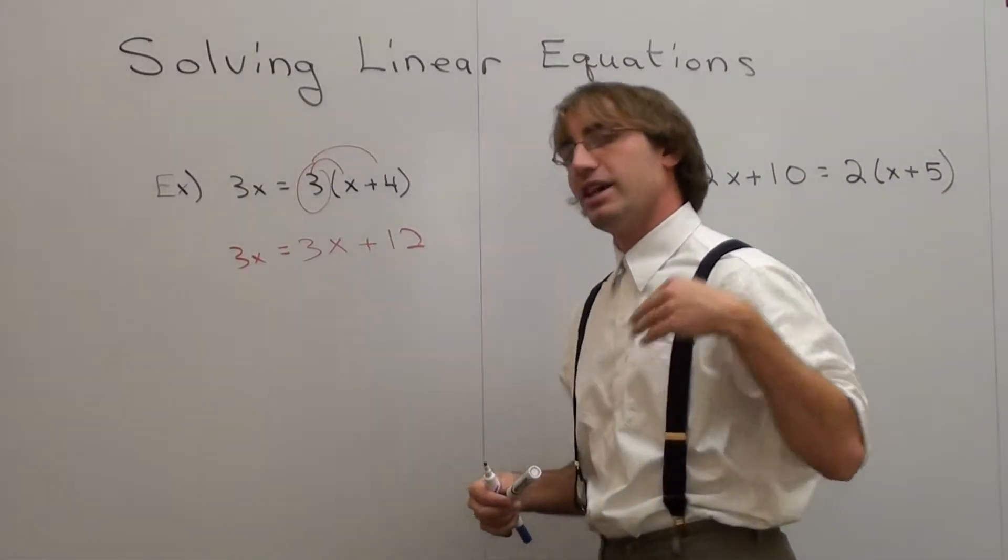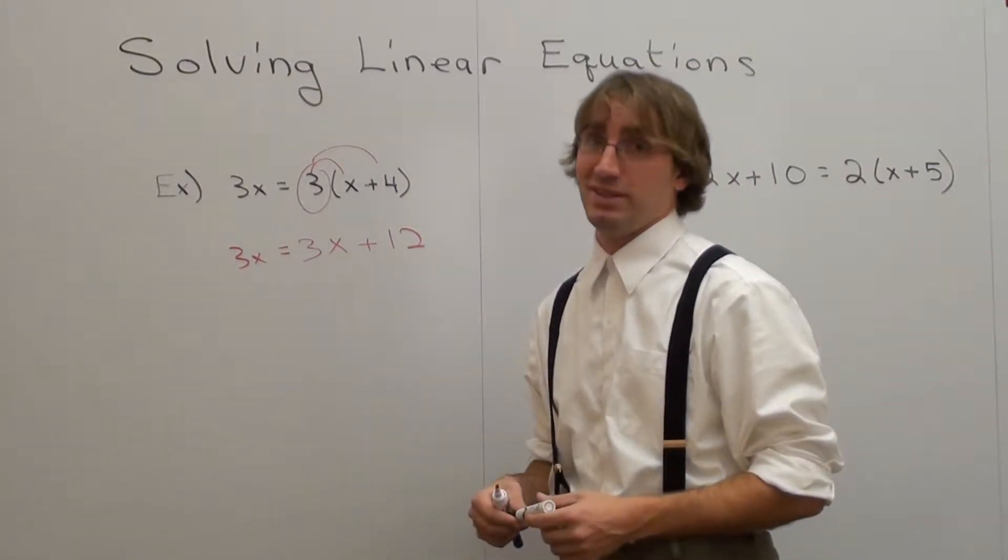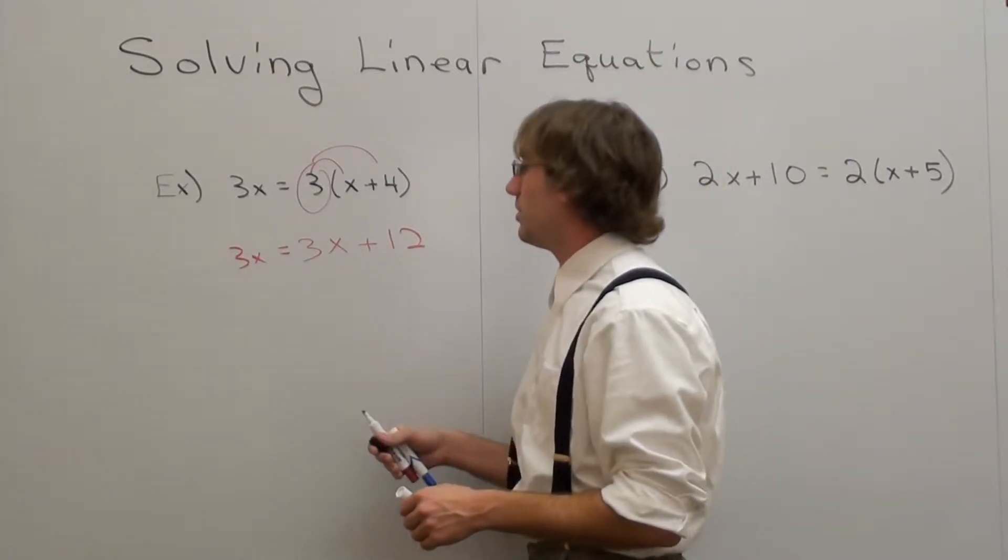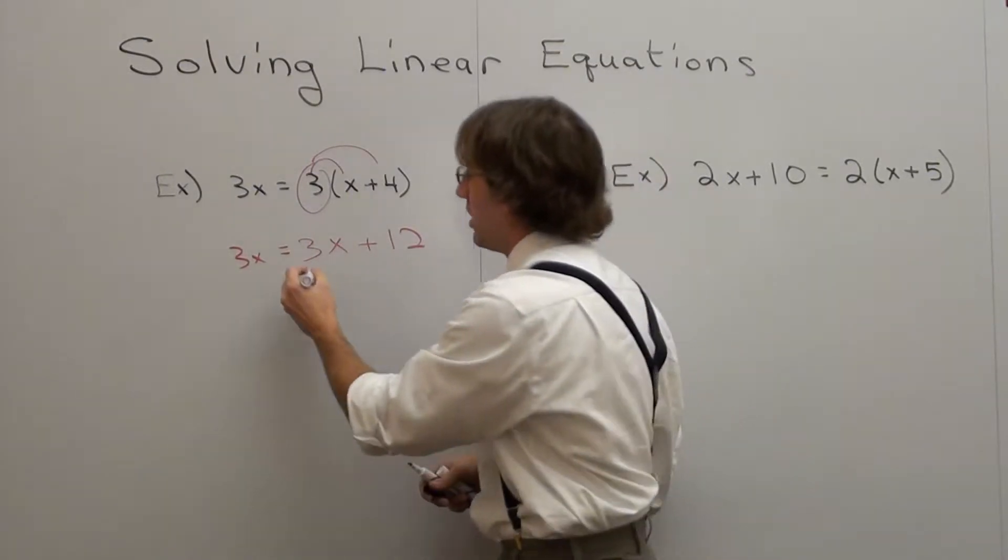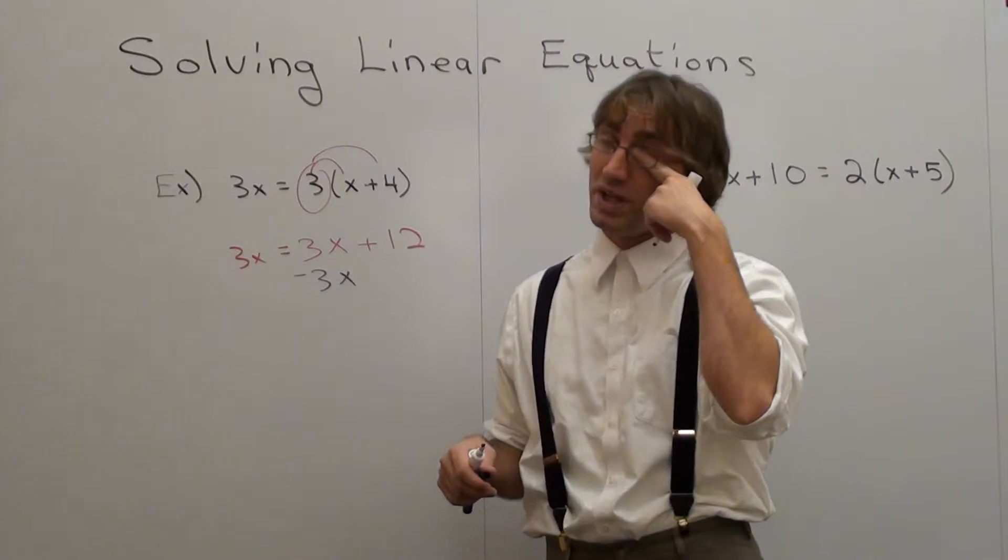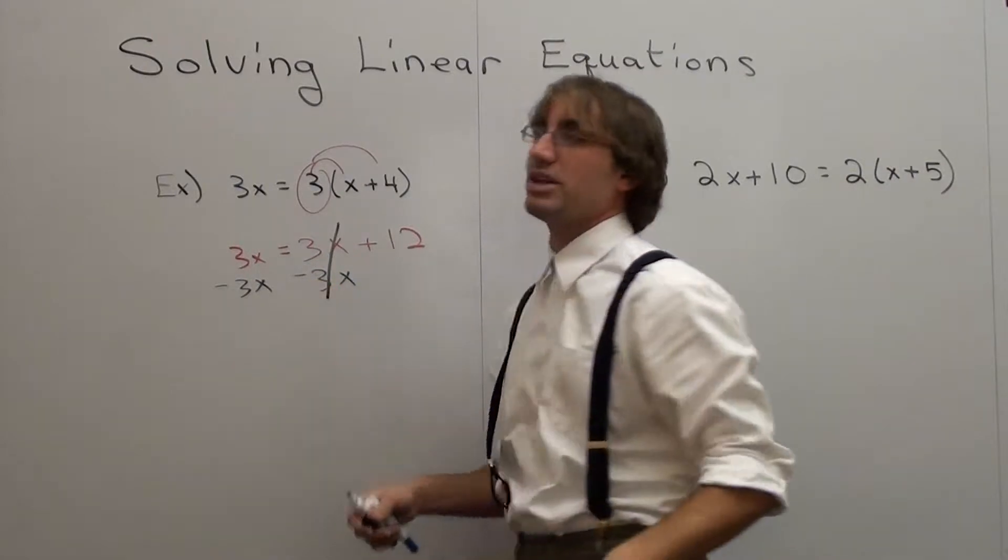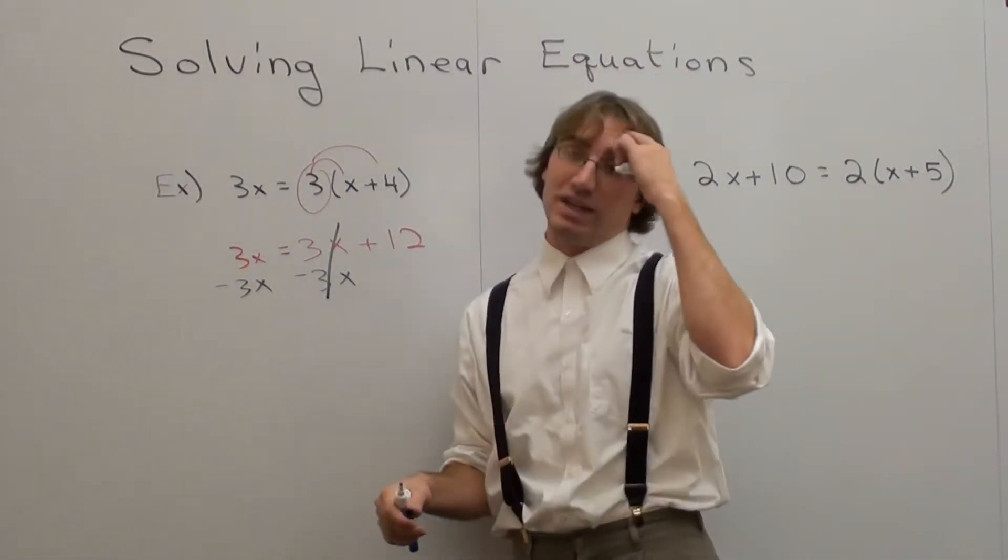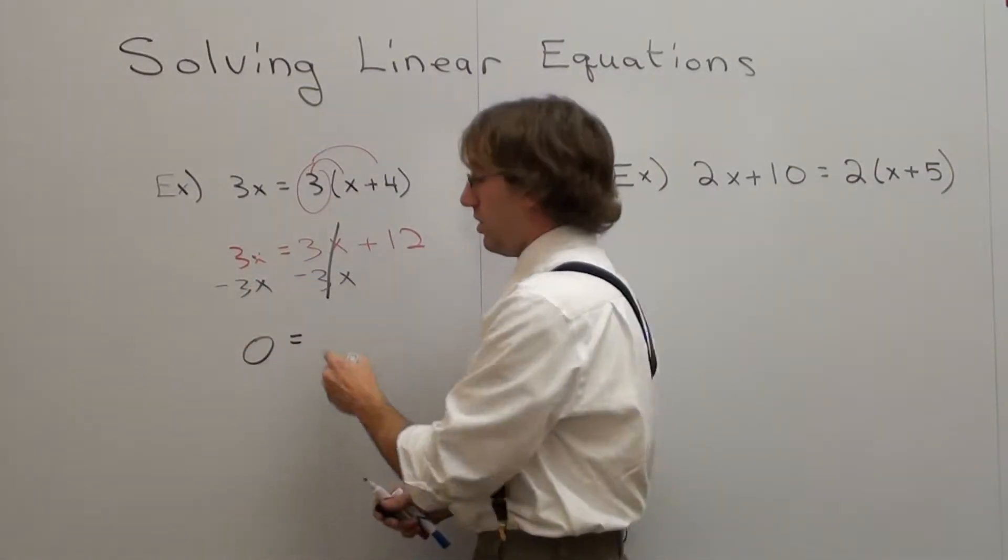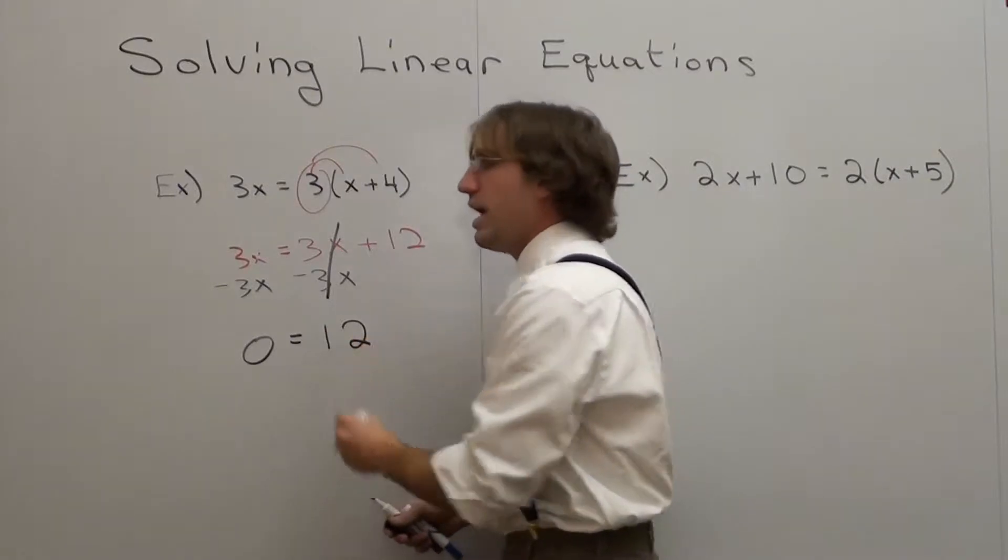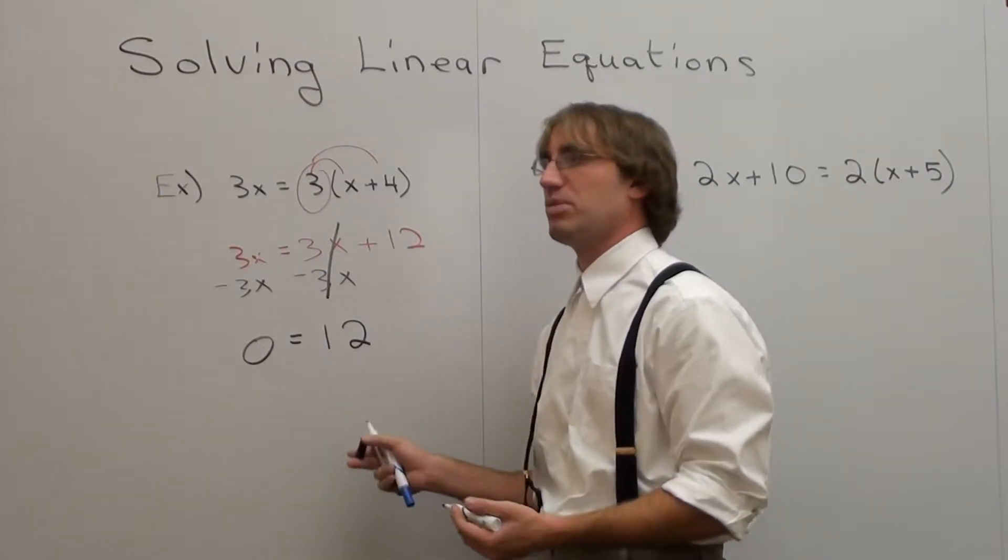And that's equal to 3x. Get everything with an x on one side and everything without an x on the other. I can't combine like terms. So I can move this 3x. Let's subtract 3x on both sides. What I do on one side of the equation, I do on the other. 3x minus 3x is 0. It's not 1, not x, it's 0. 3x minus 3x is 0. 0 equals 12. I didn't get x equals a number.